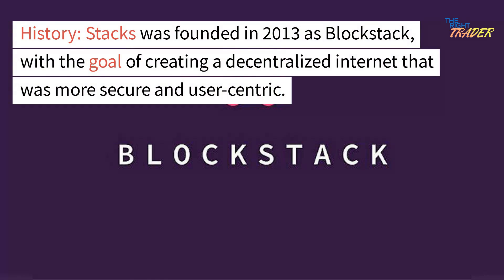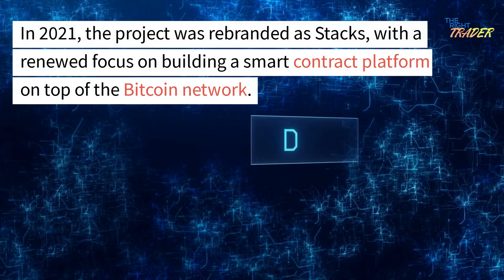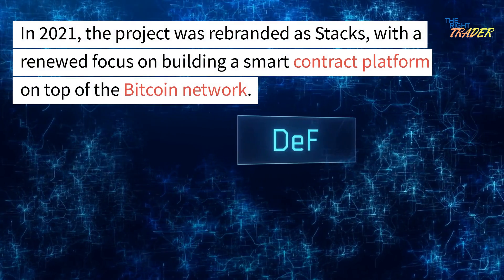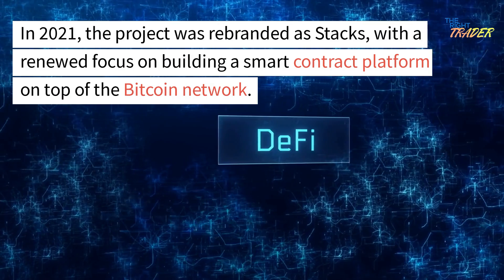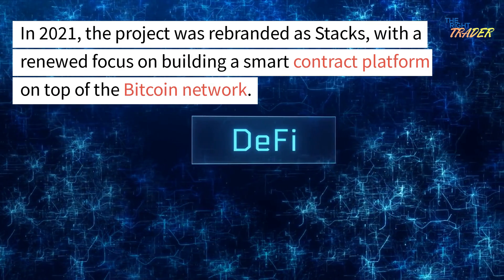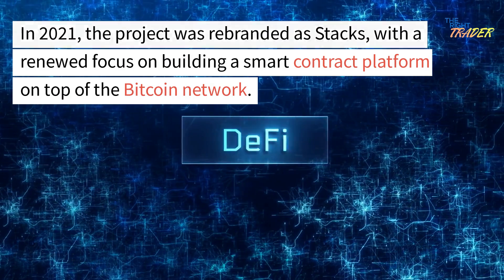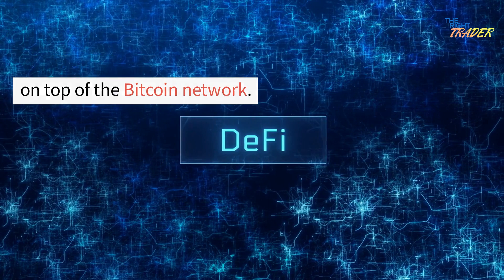Stacks was founded in 2013 as Blockstack, with the goal of creating a decentralized internet that was more secure and user-centric. In 2021, the project was rebranded as Stacks, with a renewed focus on building a smart contract platform on top of the Bitcoin network.